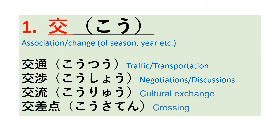The meaning of the first kanji is association, or change of season, year, etc. The examples are: number one, kotsu, which means traffic or transportation; number two, kosho, which means negotiations or discussions; number three, koryu, which means cultural exchange; and number four, kosaten, which means crossing. All these words have this 'ko' kanji, and the meanings are related to some association or some kind of change.